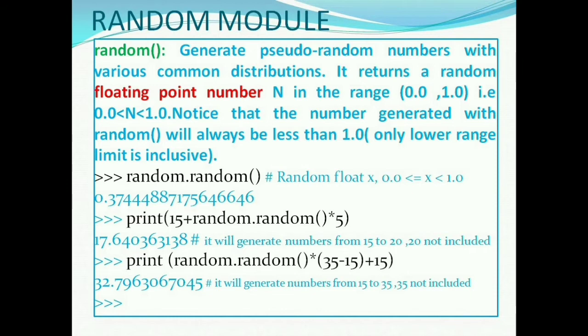In the first example, random.random will generate numbers from 0.0 to 1.0 where 1.0 is not included. In the second example, 15 plus random.random multiply by 5 will generate numbers from 15 to 20 and 20 is not included.